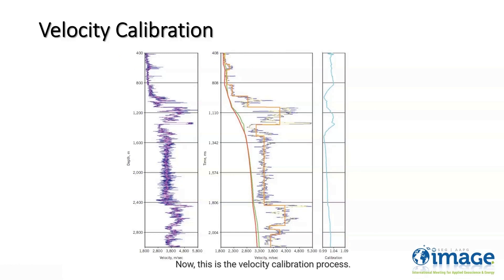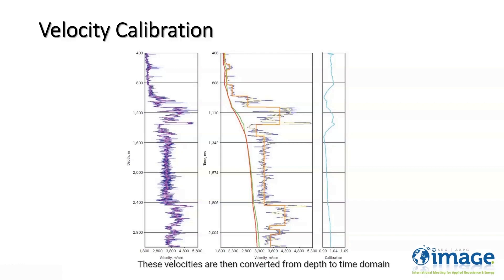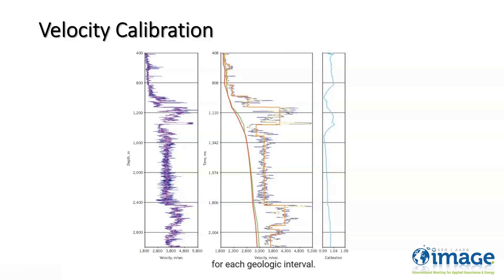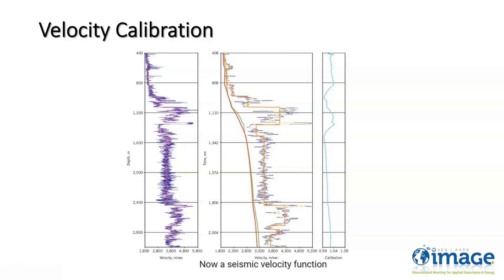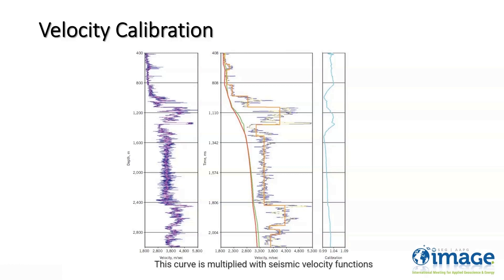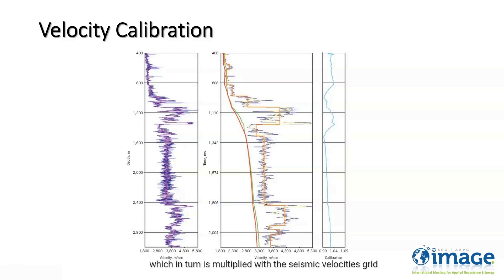This is the velocity calibration process. A large moving average operator is applied to the well velocities to smooth them out. These velocities are then converted from depth to time domain. Then using formation tops or interpreted horizons, the velocities are block-averaged to get interval velocities for each geologic interval. Finally, the interval velocity is converted to average velocity. A seismic velocity function closest to the well is also converted into average velocity. Using these average velocities from seismic and well, a calibration curve is generated. This curve is multiplied with seismic velocity functions to upscale them according to the well velocities. In case of multiple wells, a calibration grid is generated, which in turn is multiplied with the seismic velocities grid to upscale it according to the well velocities.